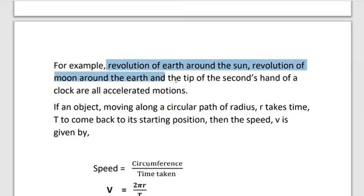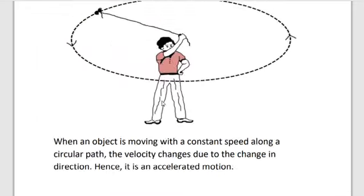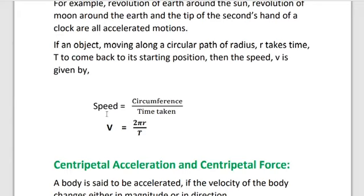What are the examples? Revolution of the earth around the sun, revolution of the moon around the earth, and the tip of the seconds hand of your clock are all accelerated motion. Suppose an object is moving along a circular path of radius r and it takes time t to come back to its starting position, then speed v is given by: speed equals distance by time. Here distance equals the circumference of the circle, so speed equals circumference divided by time. The formula for circumference of a circle is 2πr, so speed v equals 2πr divided by t.